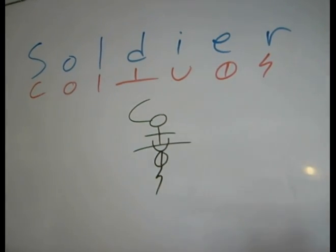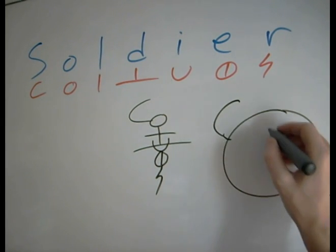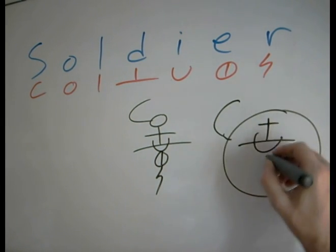Of course, the O has to grow in size for you to fit them in. But as you can see, for example, we could draw the whole word soldier. S, O, L, D, I, E, R.